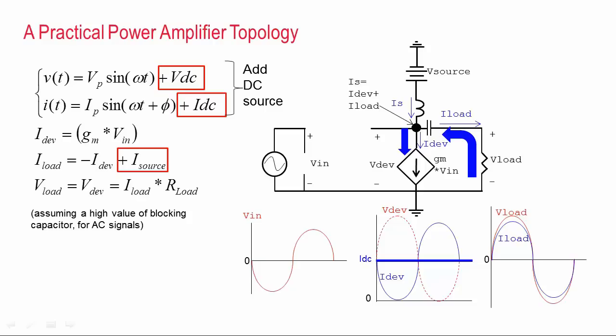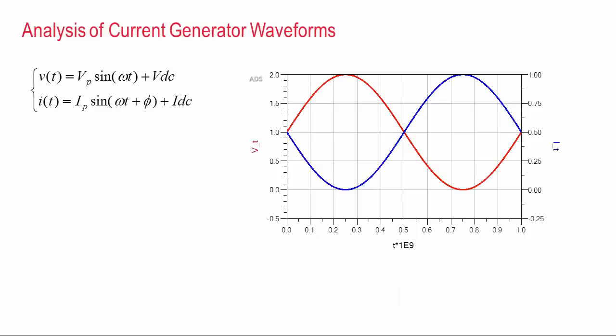And this is fundamentally how a power amplifier works. But there's one more thing that we need to consider. Since there's a DC offset across the device, power is not just being dissipated in the load, it's also being dissipated in the current source of the device.